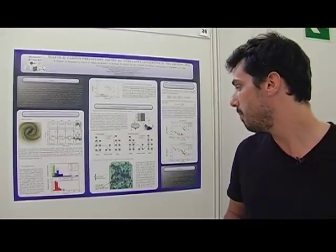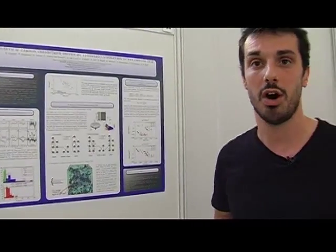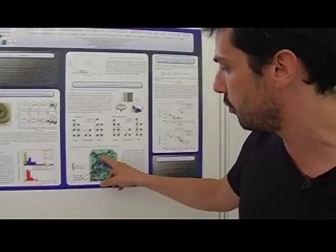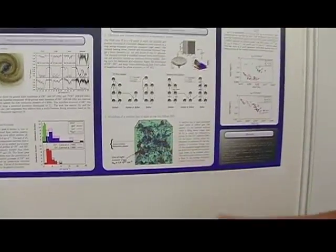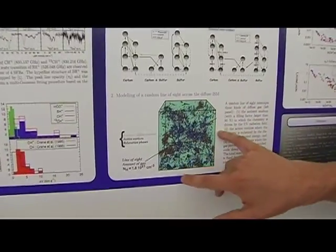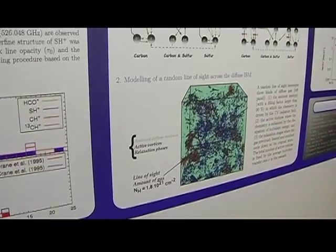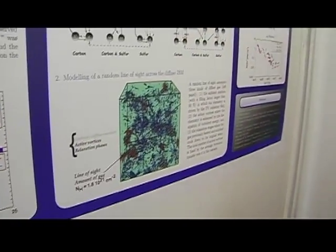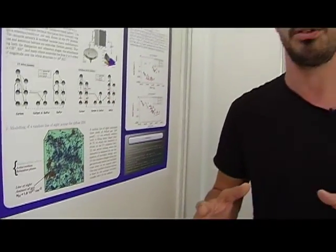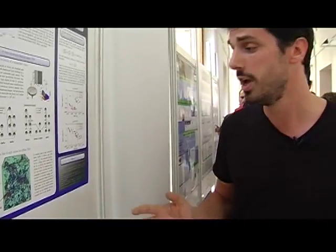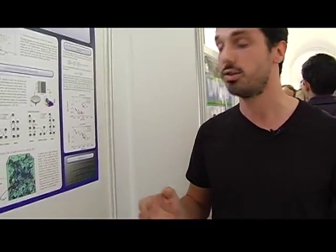So basically our current understanding of the process is that this energy is dissipated in small structures, small structures at the galactic scale, but big structures at our scale, because the typical size of a tornado is about the solar system scale.